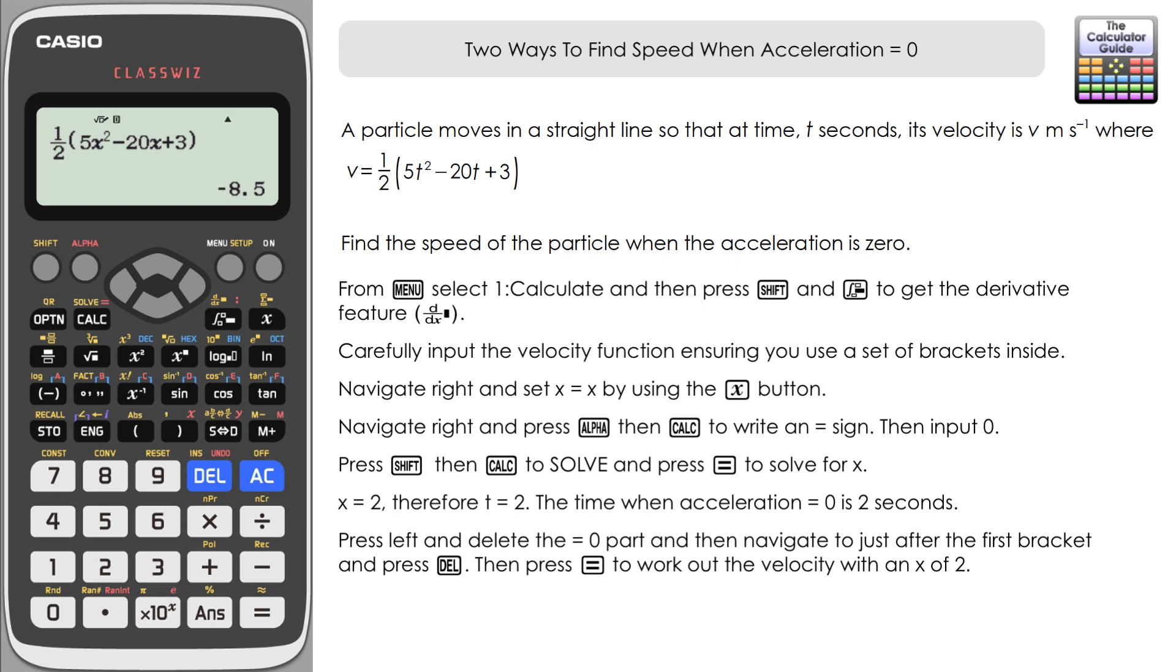Which means the velocity of the particle when the acceleration equals zero is negative 8.5. Now it said here in the question that it wants to find the speed of the particle. The direction currently is negative, or moving in the negative direction, so all we need to do is to take the absolute value of that. So we're just taking the value 8.5, and that's going to be our speed, 8.5 meters per second.